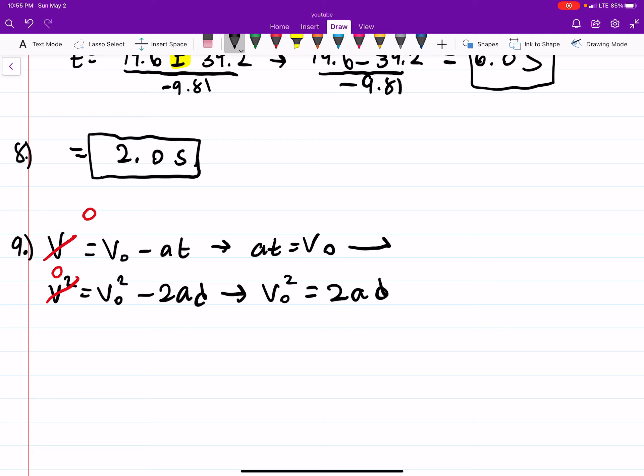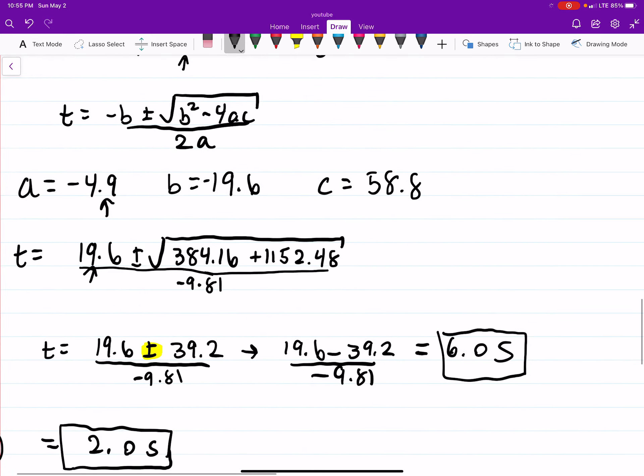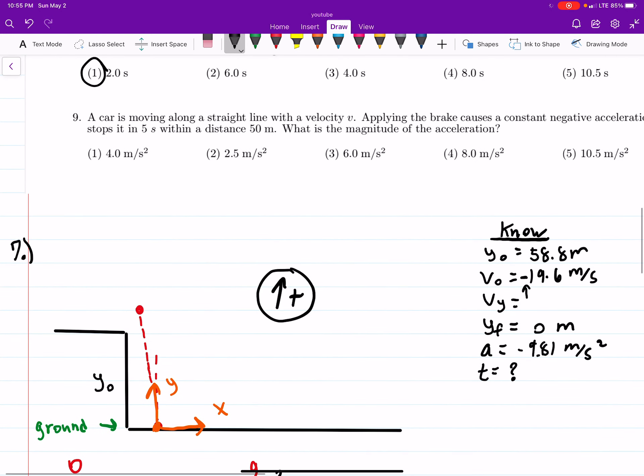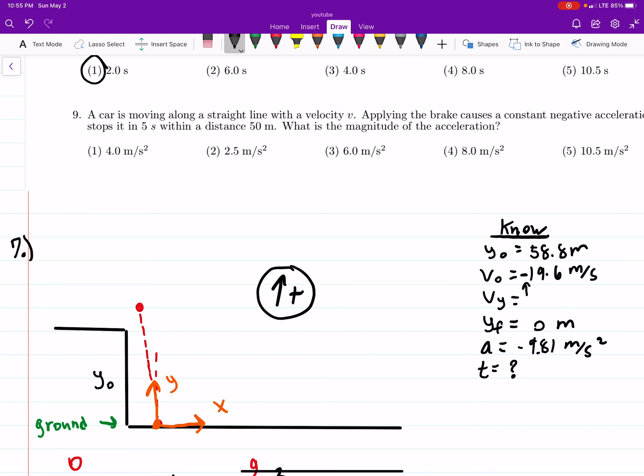So we have, if I move that over, AT equals V-naught. And over here I have V-naught squared equals 2AD. So if I were to square both sides here, I'll get A squared T squared equals V-naught squared, which can now be plugged into here. A squared T squared equals 2AD. This A will drop with this A here. And we can find that the acceleration is 2 times the distance divided by time squared, where those are all given. So 2 times 50 over 5 squared, and I get 4.